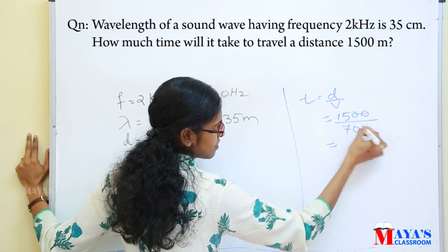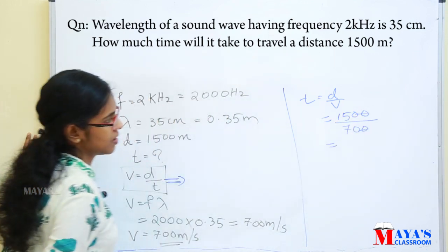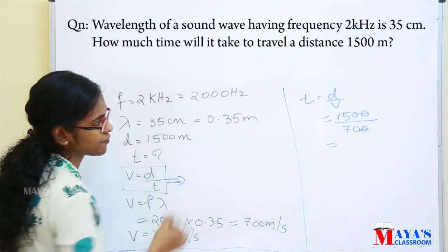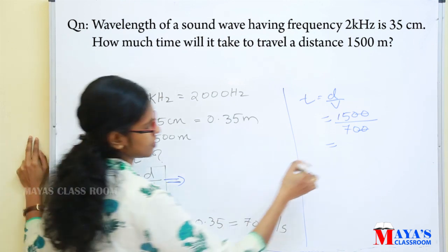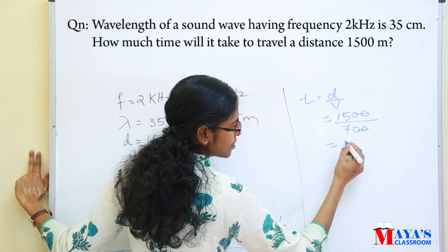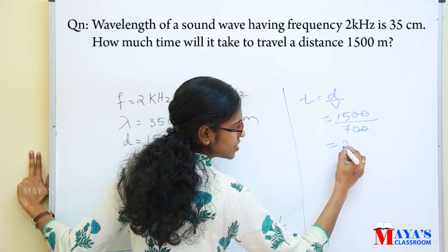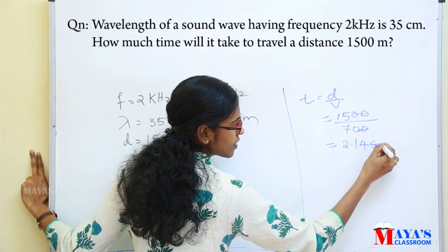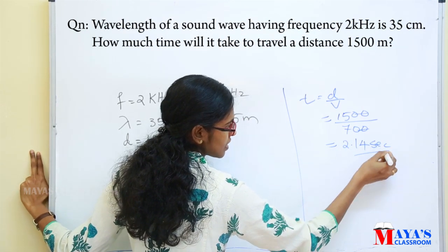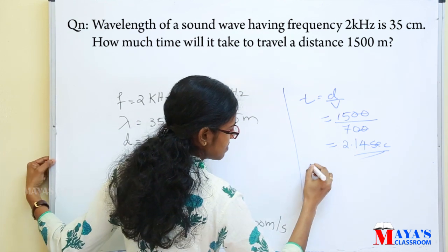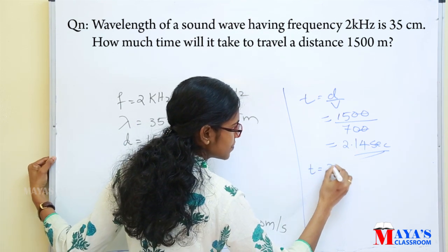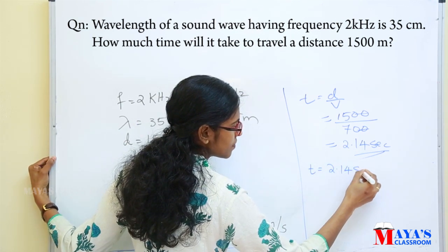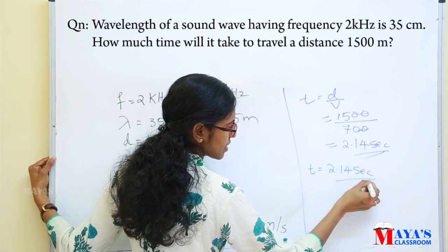We calculate 1500 divided by 700, which simplifies as 15 divided by 7, and that equals 2.14. Therefore, time t is equal to 2.14 seconds.